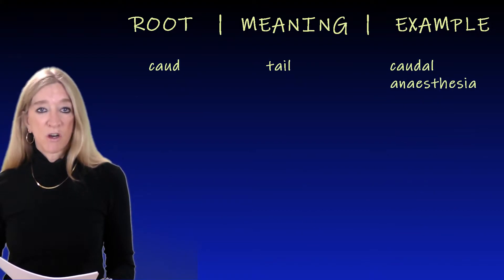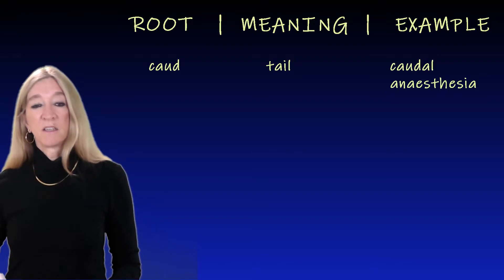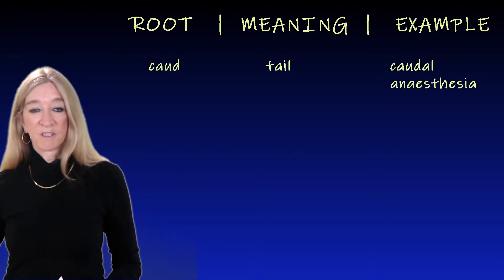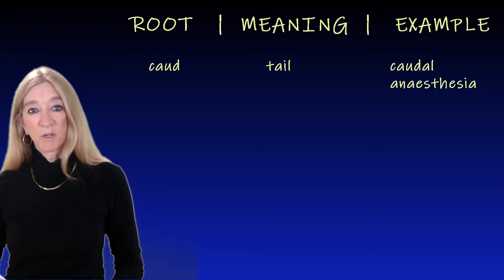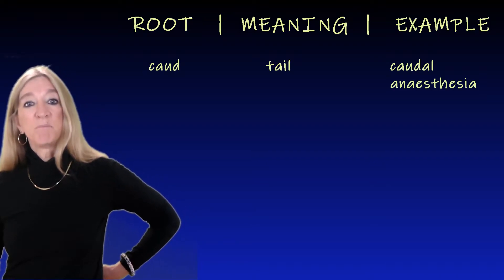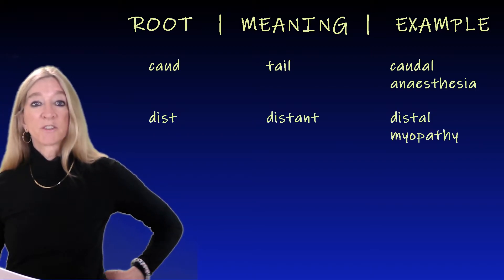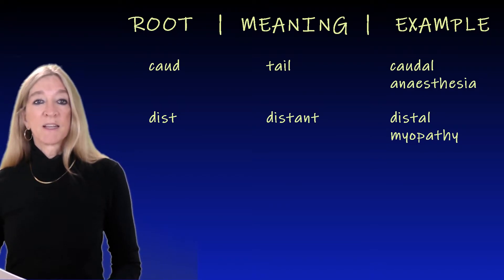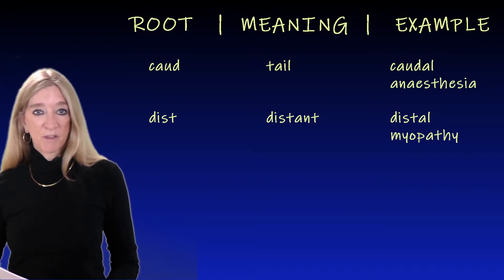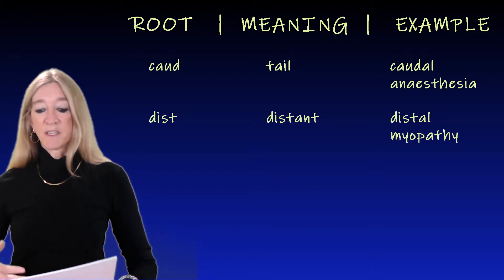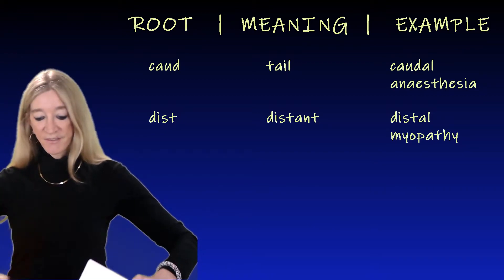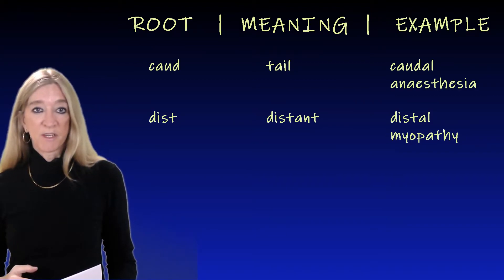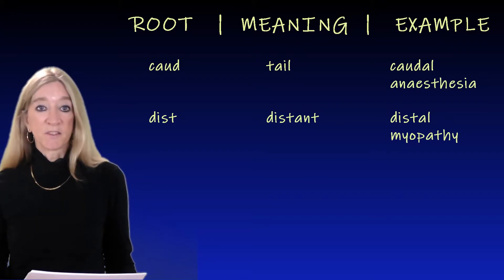The next root, 'caud,' meaning tail. An example is caudal anesthesia, also called an epidural — a nerve block of the very base of the spine. The next root, 'dist,' meaning distant. An example is distal myopathy, a disease of the muscles that are distant, away from the center of the body, mainly hands and feet — essentially a weakness of the hands and feet.